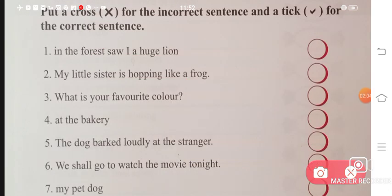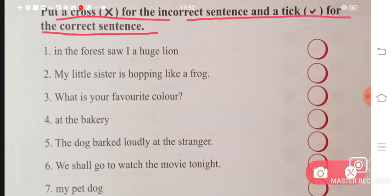Now let us do an exercise. Put a cross for the incorrect sentence and a tick for the correct sentences. 'In the forest saw I a huge lion' - this is not making a sentence, so I'll cross it. 'My little sister is hopping like a frog' - I can understand the complete meaning. Perfect, so yes it is a sentence.